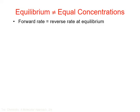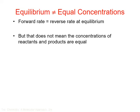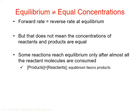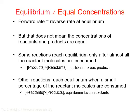Some reactions reach equilibrium only after almost all of the reactant molecules are consumed — these reactions favor the products at equilibrium. Other reactions reach equilibrium when only a small percentage of the reactant molecules are consumed, resulting in only a small concentration of products. We say these reactions favor the reactants at equilibrium.